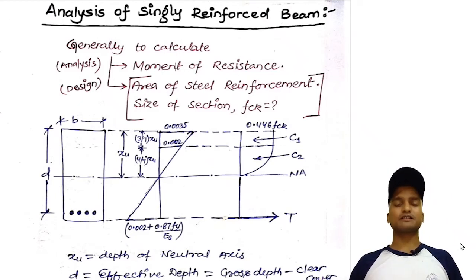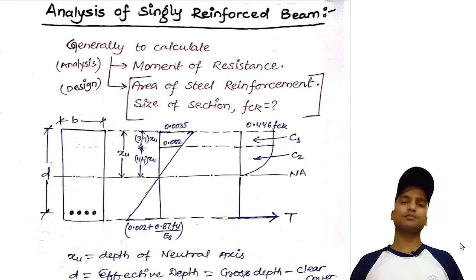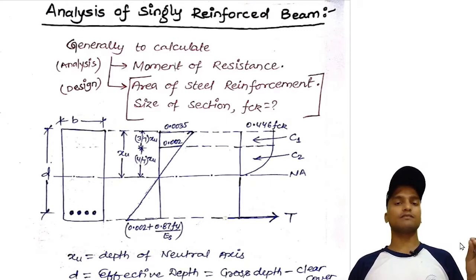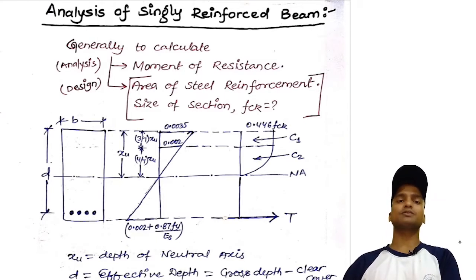Hello everyone and welcome to this next class where we are going to discuss a new topic: analysis of singly reinforced beam. Just like in the previous class, we started with the limit state of collapse under flexure, which is mostly common in beams and slabs. We will first look at the design of singly reinforced beams, which are mostly rectangular in cross section. Singly reinforced means the reinforcement is provided at the bottom. Generally there are two types of problems: Type 1 is analysis and Type 2 is design.